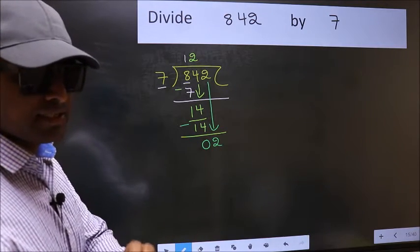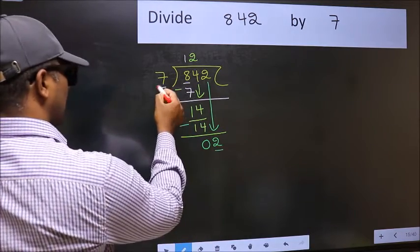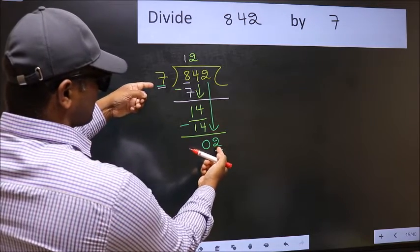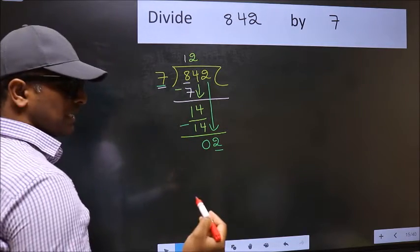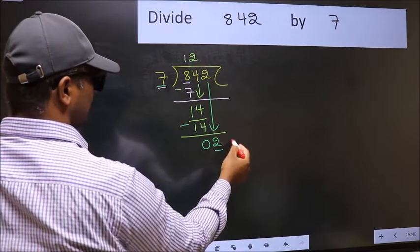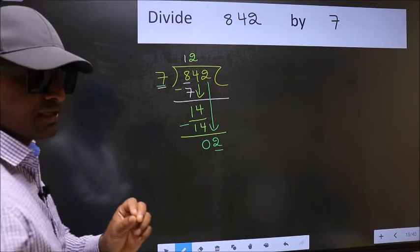And the mistake is this. Here we have 2, and here 7. So, what many do is, they directly put dot and take 0. Which is wrong.